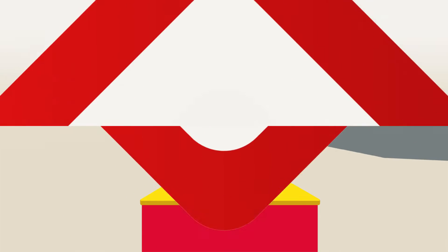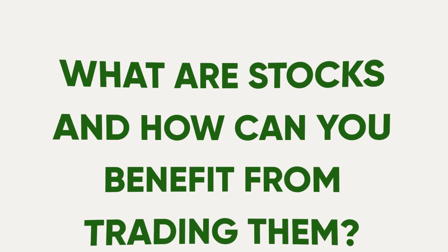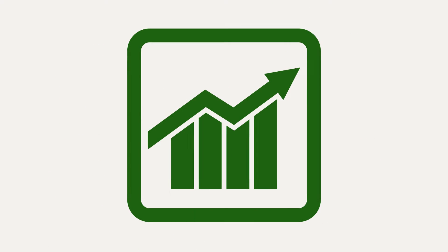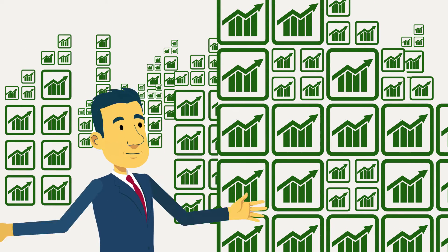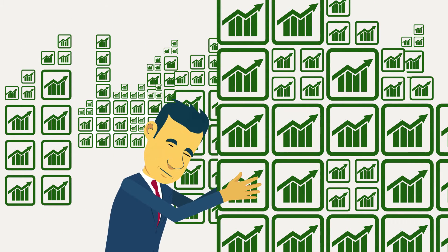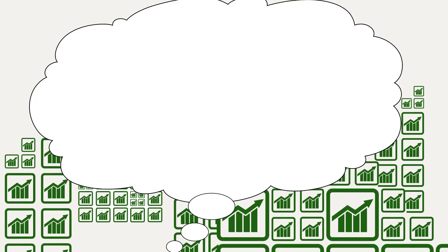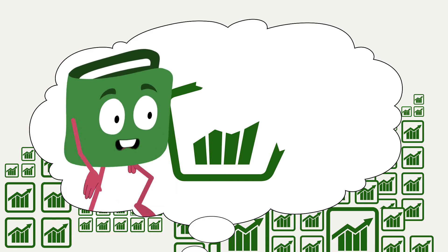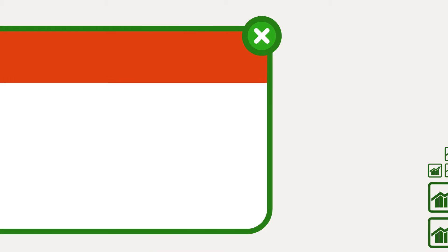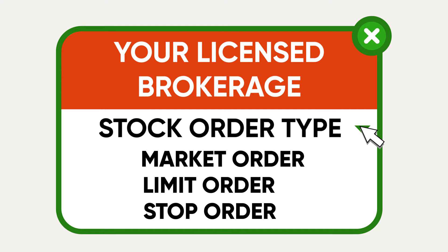Let's start with the basics. What are stocks and how can you benefit from trading them? A stock represents ownership of a fraction of a publicly traded company. To make their investment worthwhile, shareholders hope that the company will perform well, increasing the demand for its stocks and thus raising the stock's price. But first things first, to start trading stocks, you must go through a licensed brokerage, and this is exactly where stock orders come into the picture.